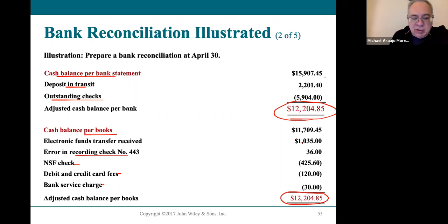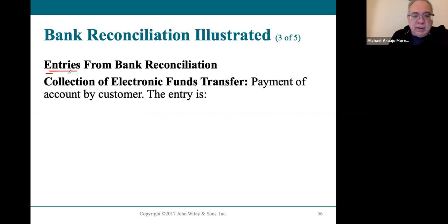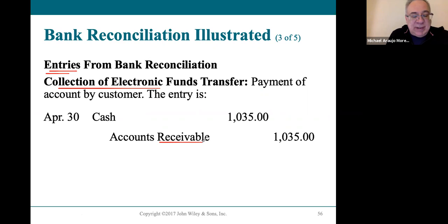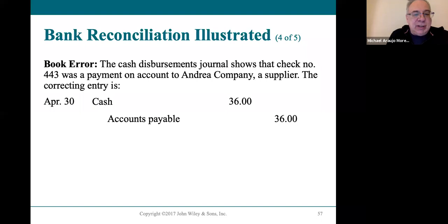Anything that affects your books needs to be recorded with a journal entry. When the bank collected money from a customer for you: debit cash, credit accounts receivable. For the $36 transposition error — you subtracted too much when paying a bill: debit cash $36, credit accounts payable. For the bounced NSF check: debit accounts receivable (you're now waiting to collect), credit cash (you don't have it). For bank fees: debit bank fee expense, credit cash.